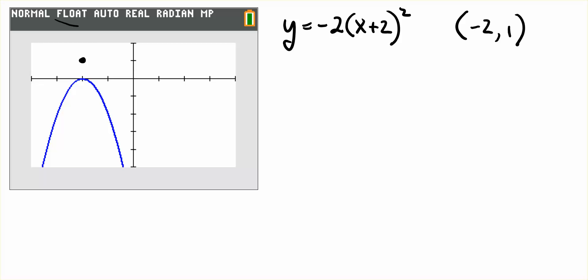And there are two tangent lines to the original function that pass through that point. What we want to do in this particular problem is to find the points on the curve whose tangent lines both pass through the point x is negative 2 and y is 1.